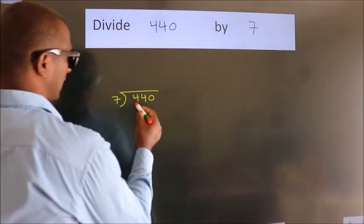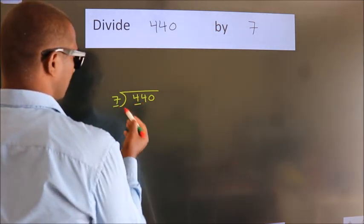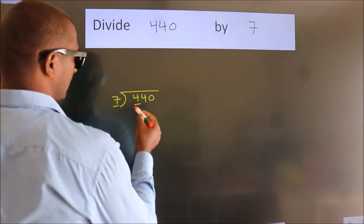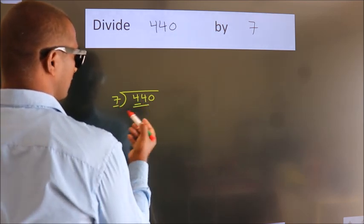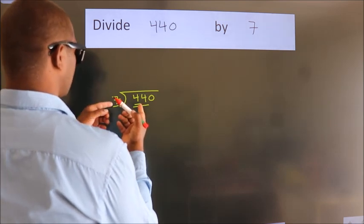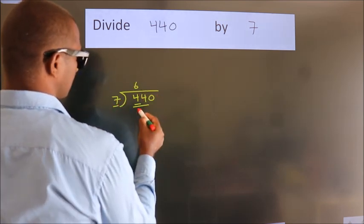here we have 4, here 7. 4 is smaller than 7, so we should take two numbers: 44. A number close to 44 in the 7 table is 7 times 6, which is 42.